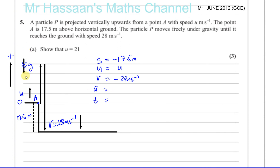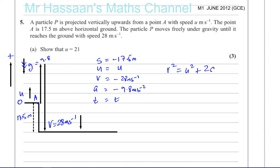The acceleration is acting downwards — gravity G equals 9.8 — so because it's acting downwards and we're taking up as positive, we mark that as negative 9.8 meters per second squared. We don't need to worry about time in this part. We have S, U, V, and A, so v² = u² + 2as seems like the suitable equation to use.